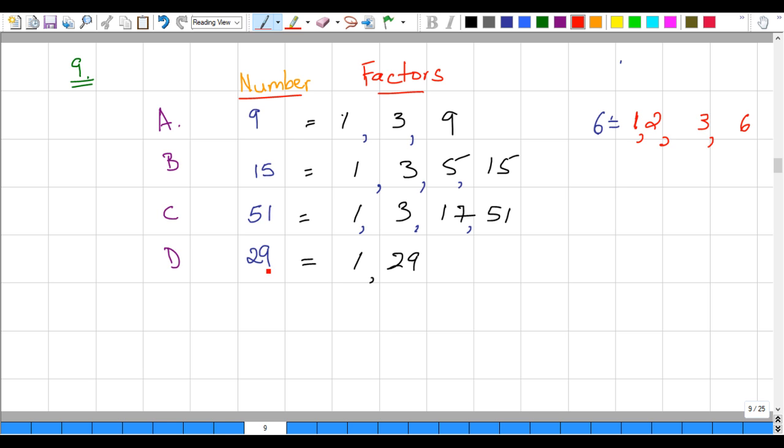But the factors of 29 are one and 29. So our answer would be 29. 29 has only two factors and is not considered a composite number.